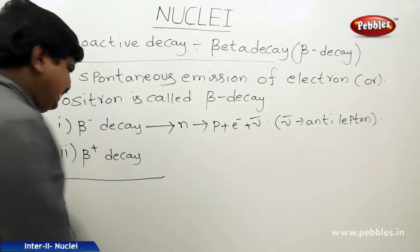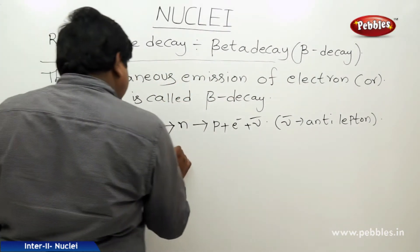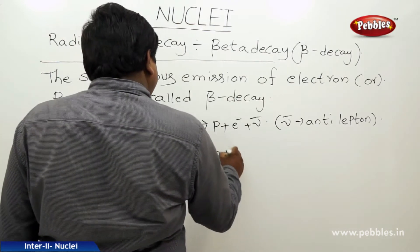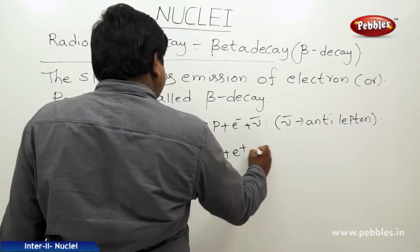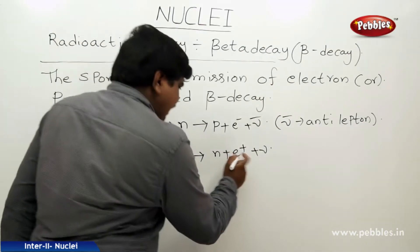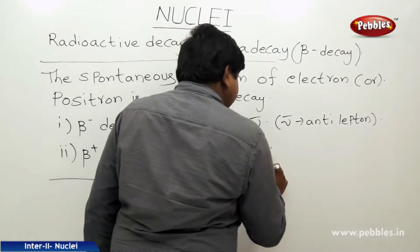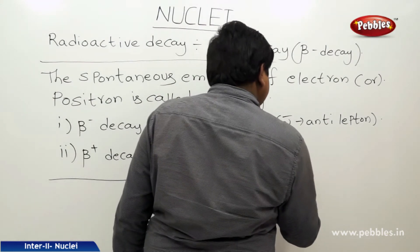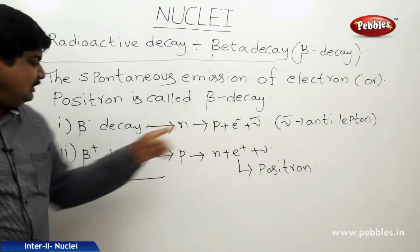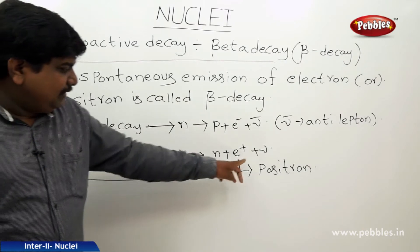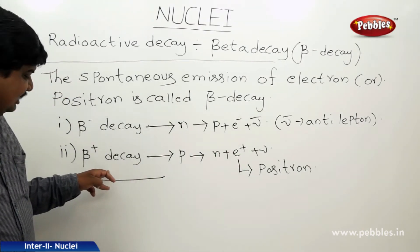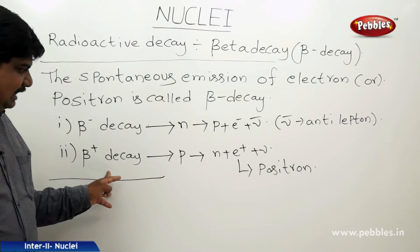In beta plus decay, the proton splits into a neutron plus an anti-electron plus a neutrino. This anti-electron is called a positron. So, if an electron is emitted, that is beta minus decay; if a positron is emitted spontaneously, that is beta plus decay.